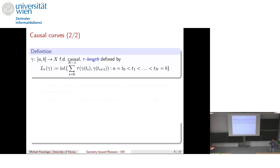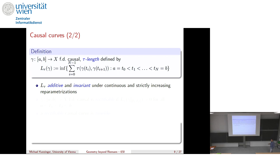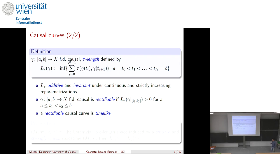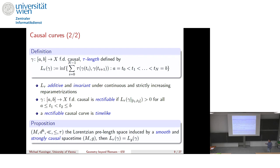Once you have such curves, you can define their length. There is a duality with metric geometry here: in a metric space you subdivide, sum the distances, and take the supremum. But since the triangle inequality goes in the wrong direction in Lorentzian geometry, you instead take the infimum of the sums formed with τ. This length is additive and invariant under re-parameterizations. A rectifiable causal curve — one with positive τ-length — is time-like.